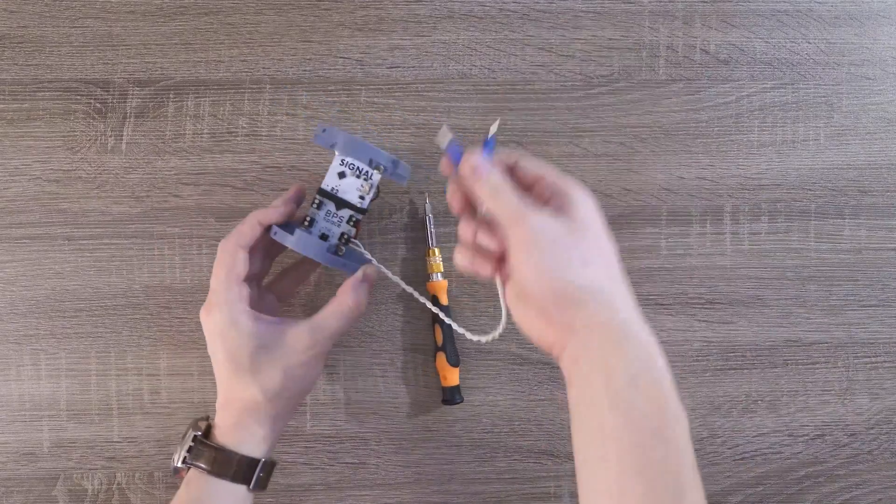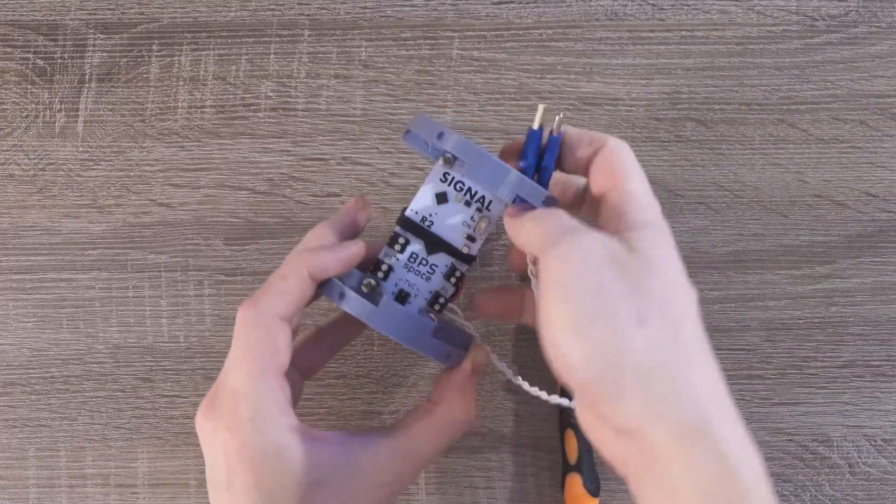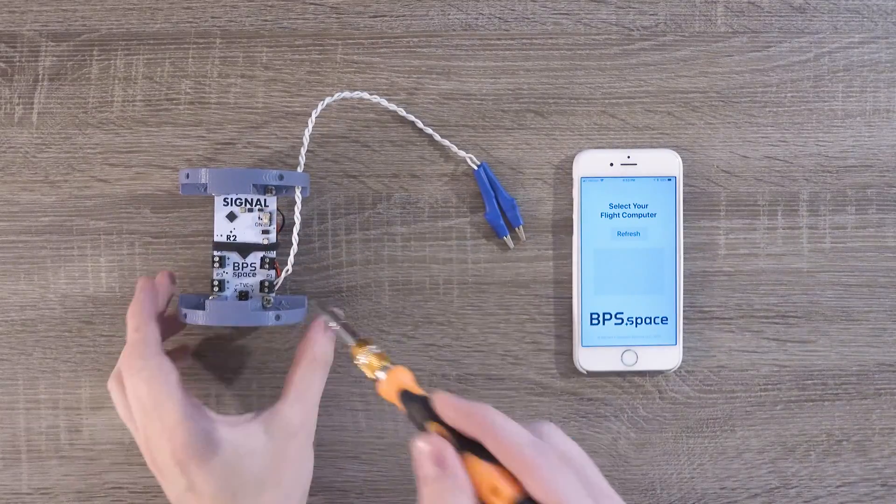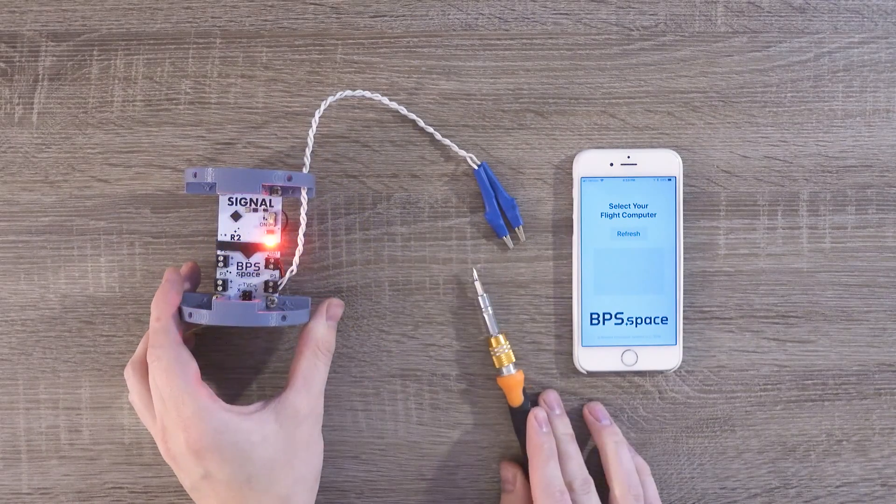Now we'll take the cable and thread it up through the top bracket of the flight computer. To make sure these cables work, we'll boot up SignalR2 and then connect to it with our app.